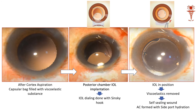Into this perfect capsular bag, we again inject viscoelastic to make space and proceed to implant the intraocular lens. This is the intraocular lens — this is the haptic, this is the optic, and this is the dialing hole, can you see? The lens is slowly implanted into the capsular bag, and then a dialer is used to adjust it and keep it in position.